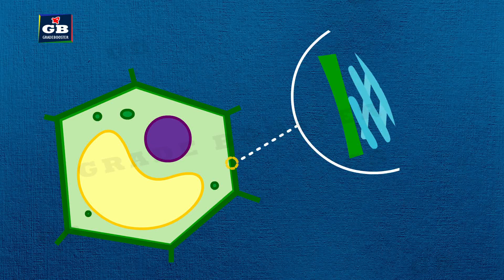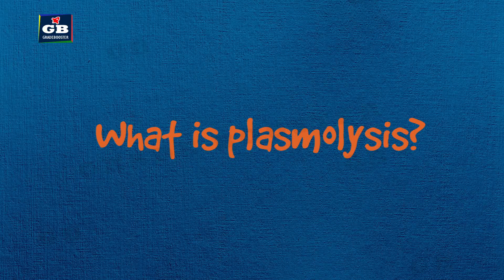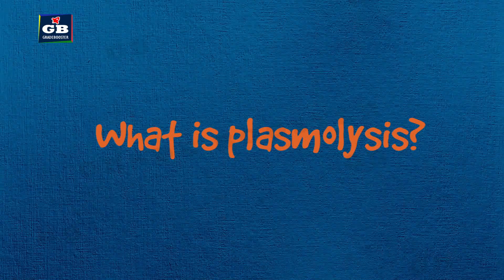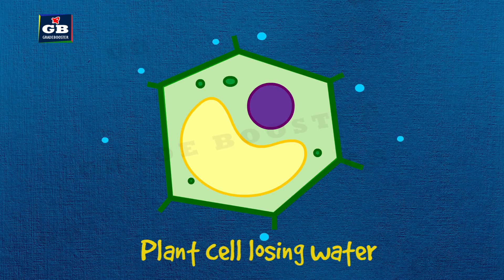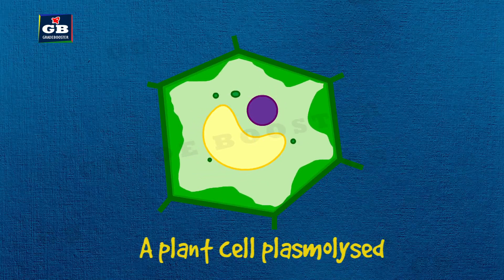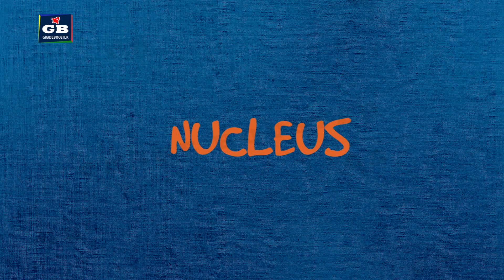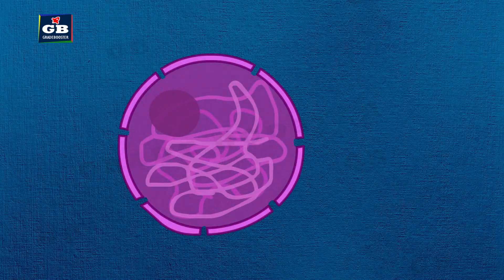The plant cell wall is made up of cellulose. Cellulose gives strength to plant cells. Sometimes plant cells undergo plasmolysis. Do you know what plasmolysis is? The water present in a living plant cell is lost through osmosis, and then the contents of the cell shrink away from the cell wall. This phenomenon is known as plasmolysis.